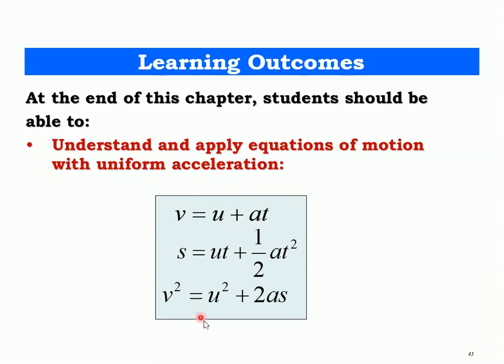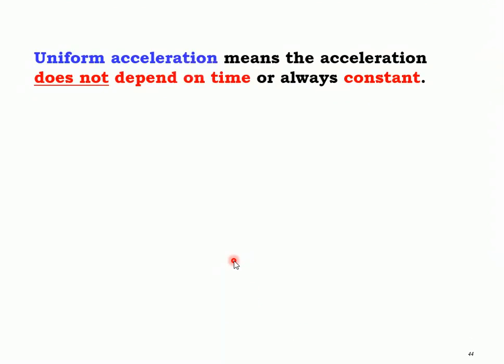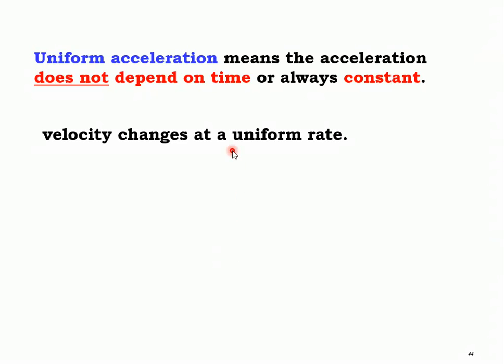There are three equations shown here, with one more to come. Uniform acceleration actually means that the acceleration does not depend on time, or it is always constant. So the value of acceleration, a, is always the same. Velocity changes at a uniform rate, which means the velocity increases uniformly or decreases uniformly.